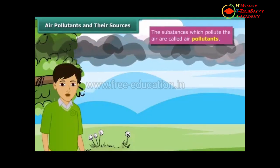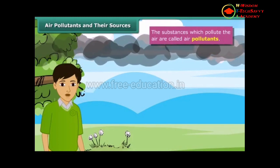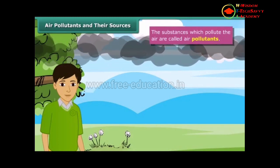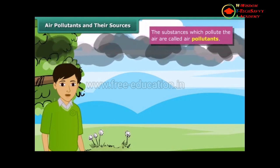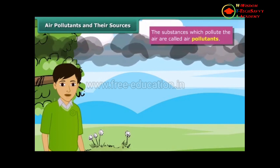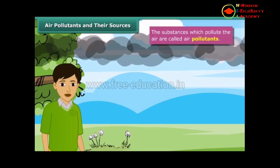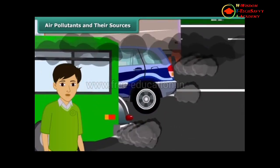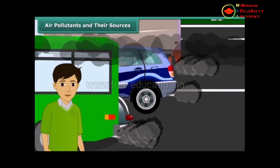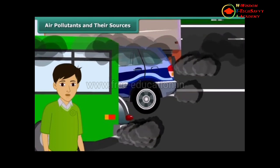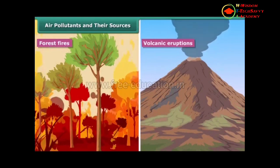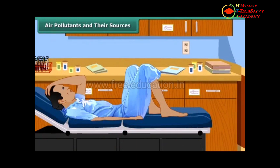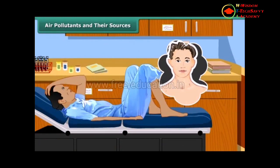Which substances pollute air? The toxic gases like carbon dioxide, sulfur dioxide, nitrogen dioxide, and carbon monoxide are often released by the engines of vehicles like trucks and buses. Sometimes they may come from natural sources like smoke and dust arising from forest fires or volcanic eruptions. These gases can make healthy people sick and sick people even worse — they affect your eyes and throat.